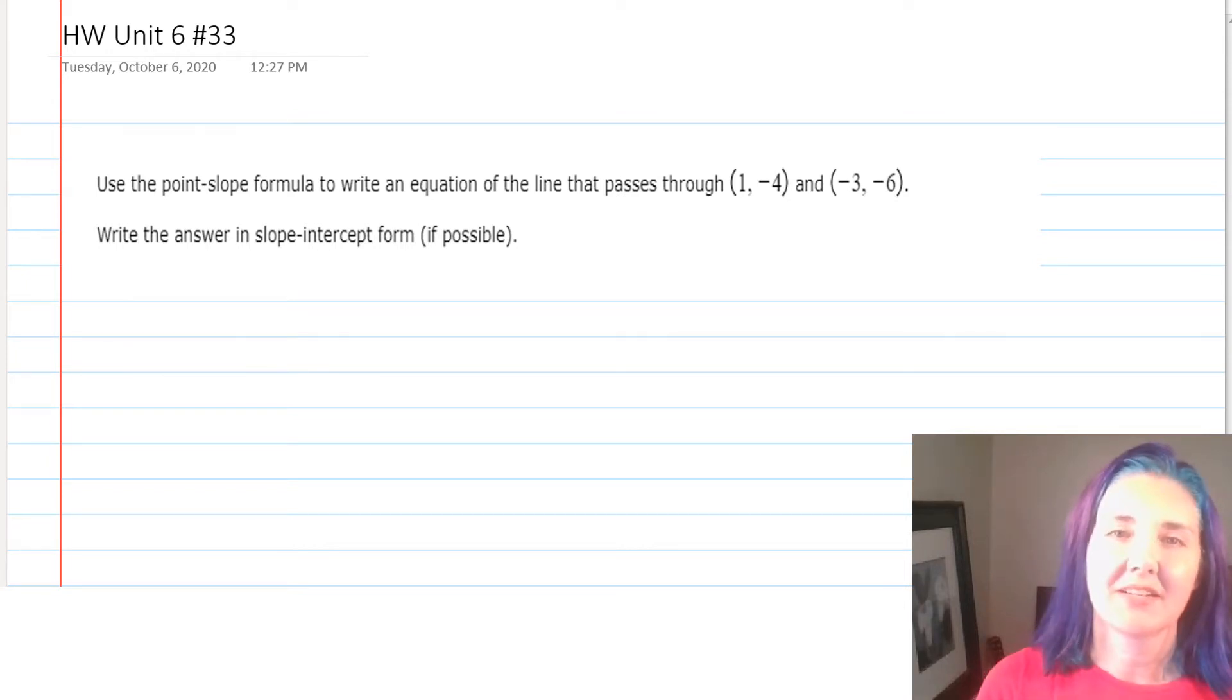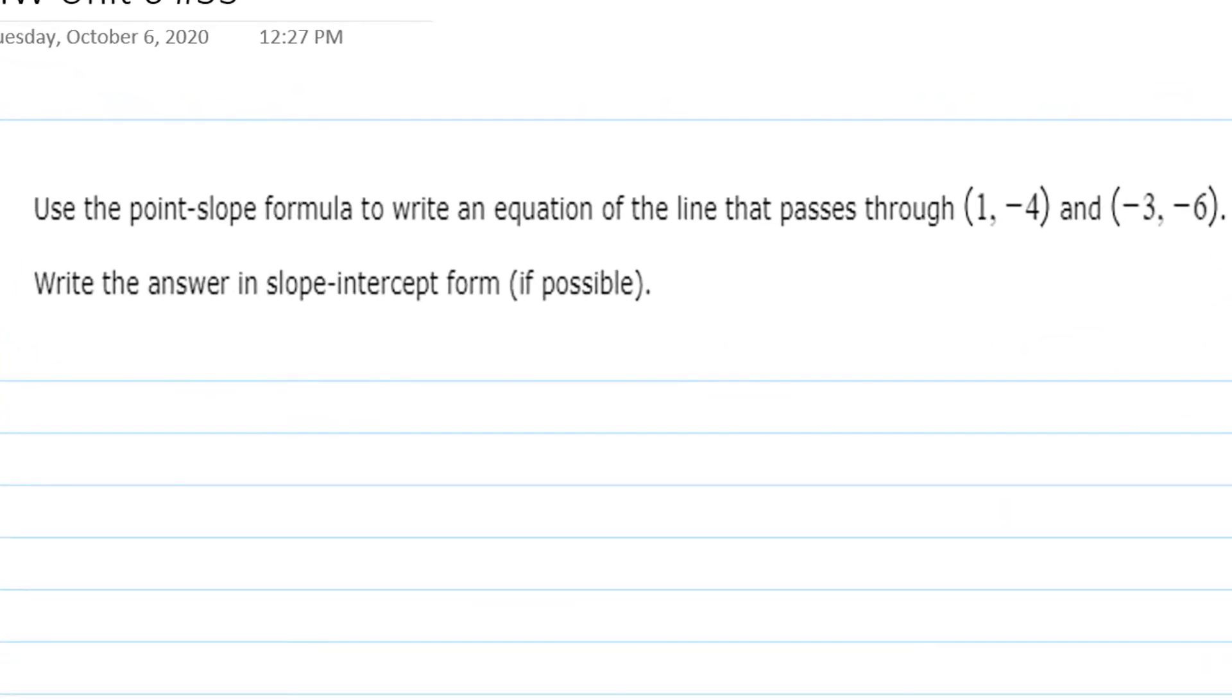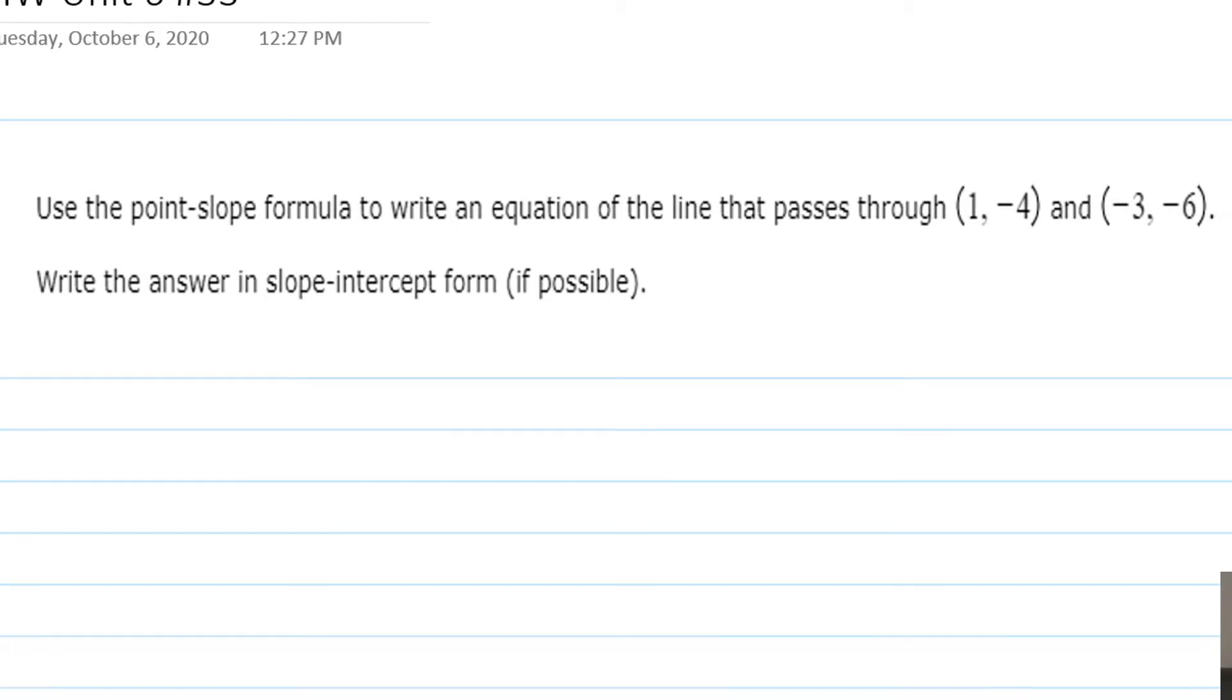Hi, I'm Ms. Hearn. Let's get started. In this video, we're going to find the equation of a line when we're given two points on the line. The question says, use the point-slope formula to write an equation of the line that passes through the points (1, -4) and (-3, -6). Write the answer in slope-intercept form, if possible.